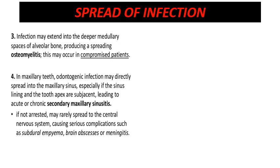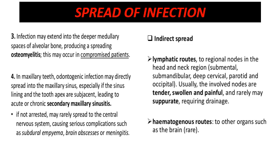Infection may extend deeper into the medullary spaces of the alveolar bone producing spreading osteomyelitis, usually in immunocompromised or debilitated patients. In maxillary teeth, infection can spread into the maxillary sinus causing secondary maxillary sinusitis, and in rare situations it may spread further upward to the cavernous sinus or into the brain, causing brain abscess and meningitis. Indirect spread via lymphatic routes may cause submental, submandibular, or upper deep cervical lymphadenopathy, with lymph nodes becoming tender, swollen, and painful — sometimes requiring incision and drainage.